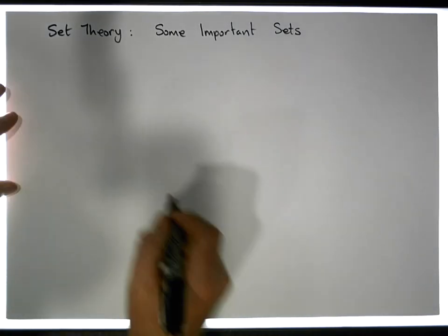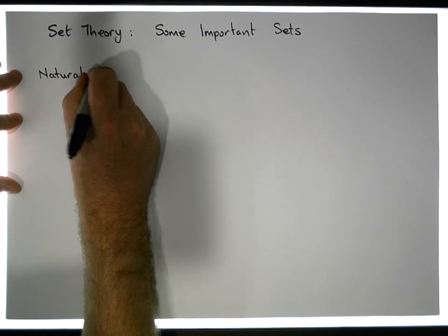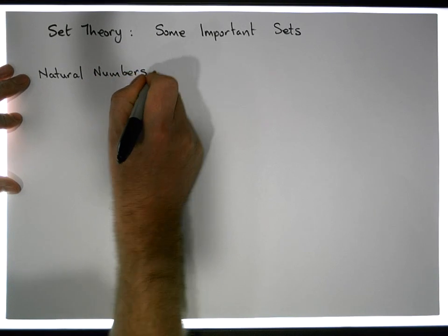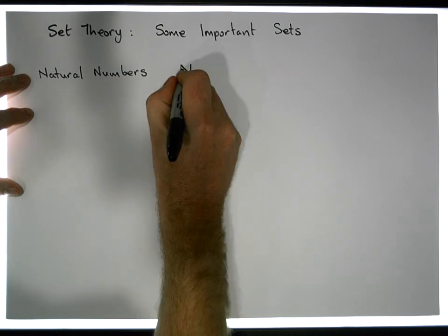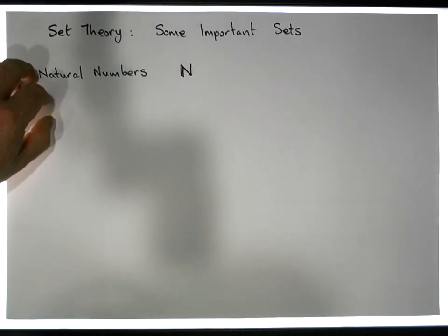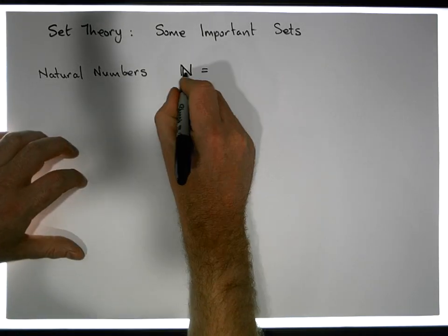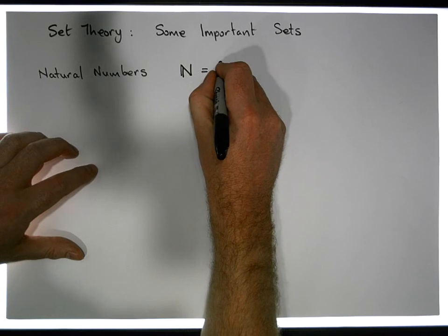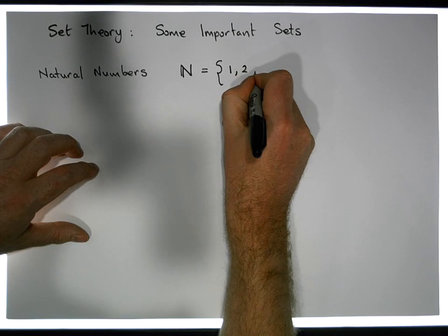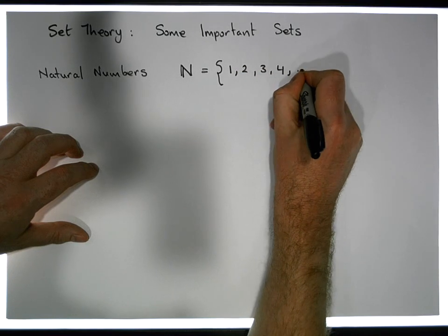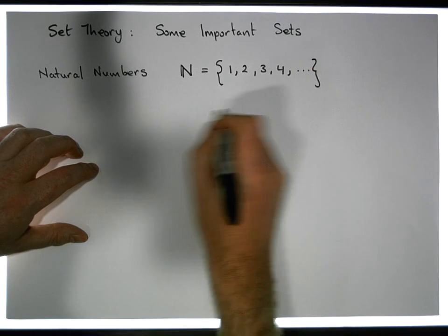These numbers are known as the natural numbers. The symbol we use for the natural numbers is N — but it's actually a bold N. We define the natural numbers N to be the set containing the numbers one, two, three, four, dot dot dot, meaning that this pattern continues forever.